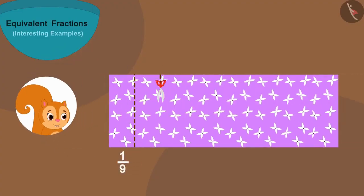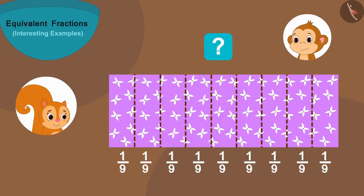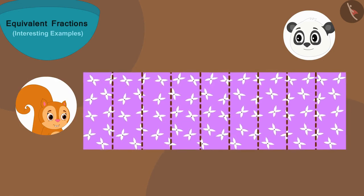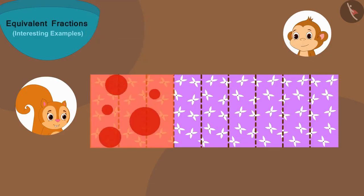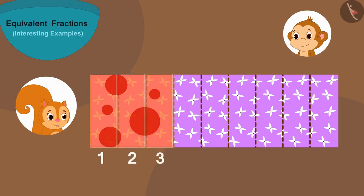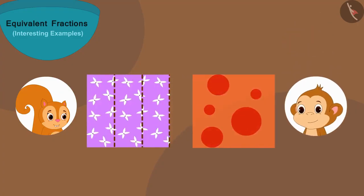But Chanda had cut her cloth into nine equal parts. Now how will Chanda be able to give Babban a cloth as long as the part of his cloth? Chanda, just like Golu, placed parts of her cloth like this and placed Babban's cloth just above it. Now she sees that three parts of her cloth are equal to one part of Babban's cloth.